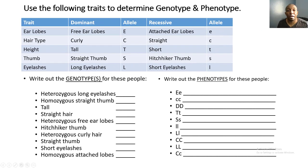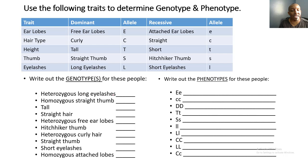Now let's practice to summarize the concepts. We'll use the following traits to determine genotype and phenotype: earlobes, hair type, height, thumb, and eyelashes. For heterozygous long eyelashes — heterozygous means different — you'd write capital L and lowercase l. For homozygous straight thumb — homo means same, and straight thumb is dominant — you write capital S and capital S. For tall, there are two ways: capital T and capital T, or capital T and lowercase t, since the dominant trait shows over the lowercase.